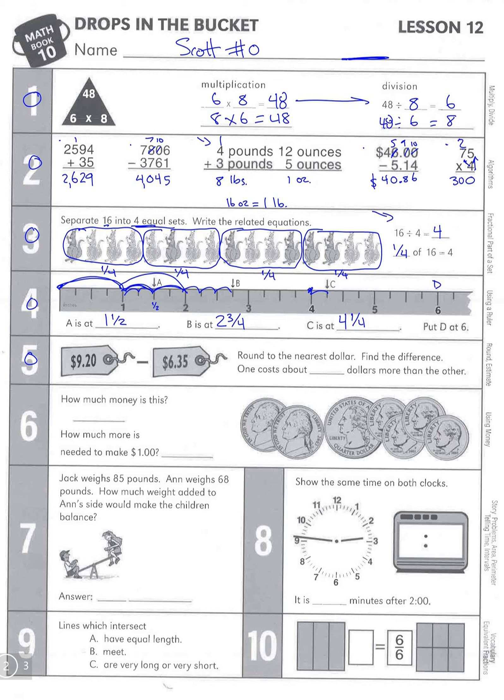Number 5: We're rounding to the nearest dollar. Nine dollars and twenty cents—that's more than nine, less than ten. If that's our 50, we're comparing 20 to 50. Well, 20 would be over here, so it's closer to nine.